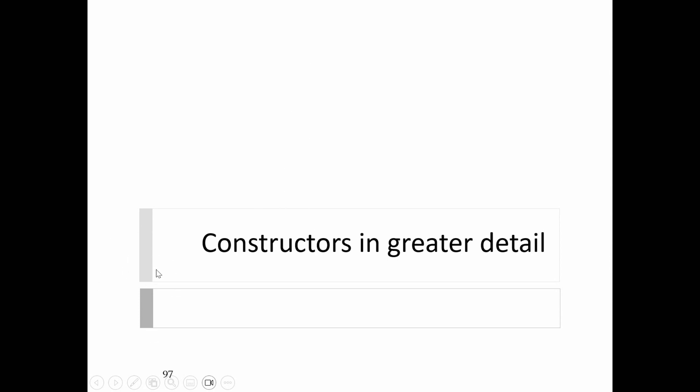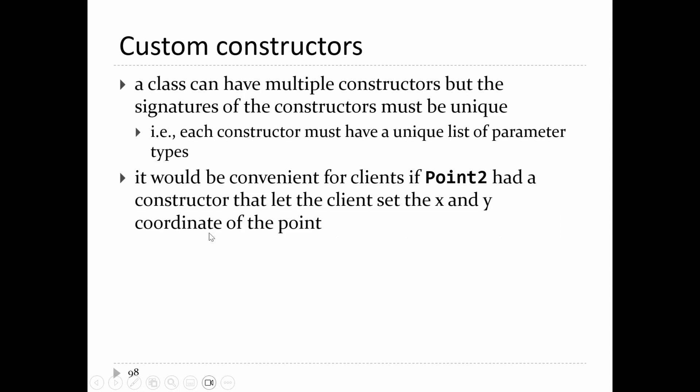Now let's go back and look at constructors again. So far we've implemented no-argument constructors — their job is to set the state of an object to some well-defined default state. Just like methods, you can have multiple constructors in your class, and just like methods, the signatures of the constructors must be unique. All your constructors have the same name — the name of the class — so if you want multiple constructors, they must all have different parameter lists.